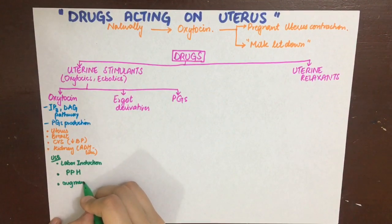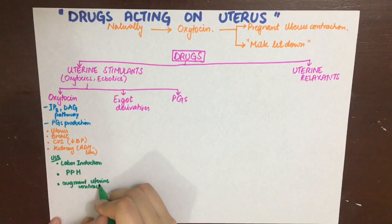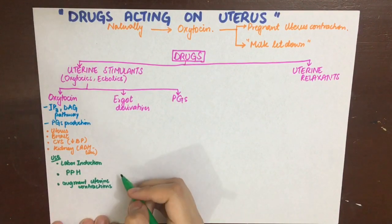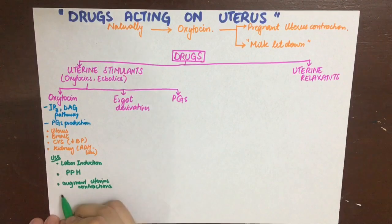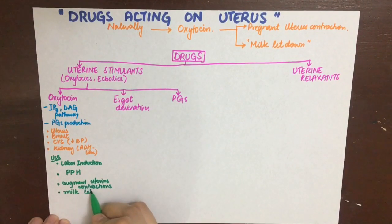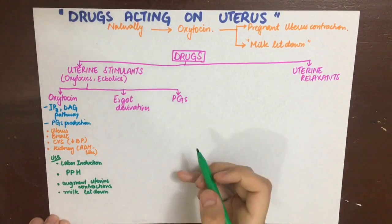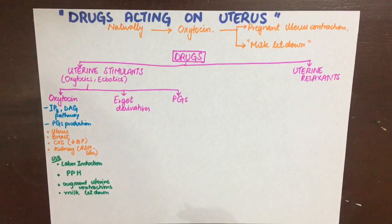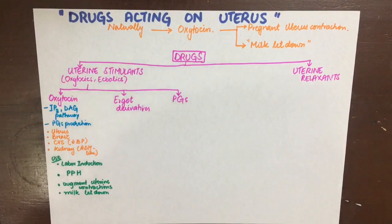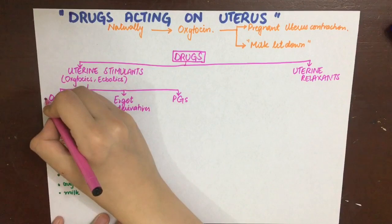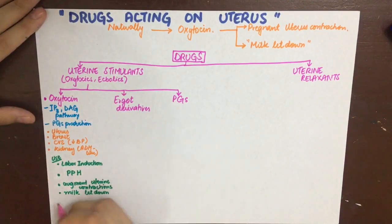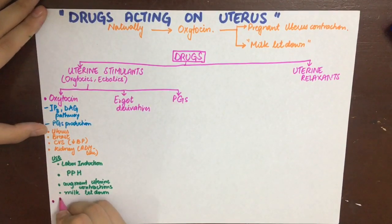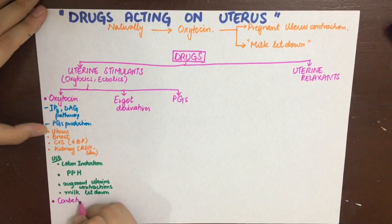When oxytocin is used to induce labor, at low doses there is a period of complete relaxation between uterine contractions, which helps maintain blood flow to the placenta and fetus, preventing fetal asphyxia. However, at large doses, oxytocin can increase the force and frequency of uterine contractions, potentially leading to fetal asphyxia or even fetal death. This is the side effect known as uterine hyperstimulation.